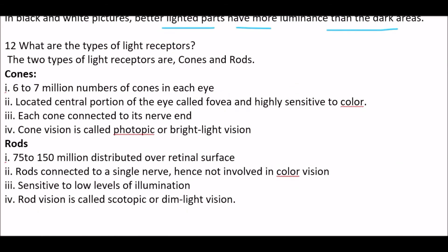Next question. What are the types of light receptors? Answer is, the two types of light receptors are, first one, cones, and second one, rods. Cones functionalities are, first one, 6 to 7 million numbers of cones in each eye. Second functionality is, located central portion of the eye called fovea, and highly sensitive to color. Third one is, each cone connected to its nerve, and cone vision is called photopic or bright light vision.